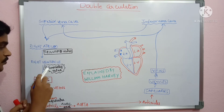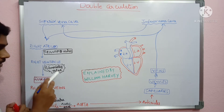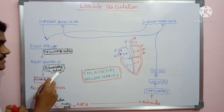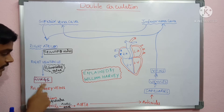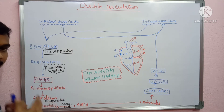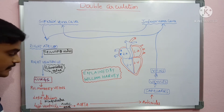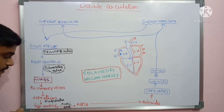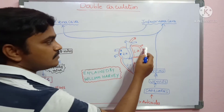From the right ventricle, blood passes through the pulmonary valve into the pulmonary artery. This is called pulmonary circulation — the blood goes to the lungs, where it is automatically oxygenated. The lungs receive deoxygenated blood and return oxygenated blood through the pulmonary veins.